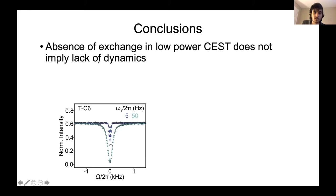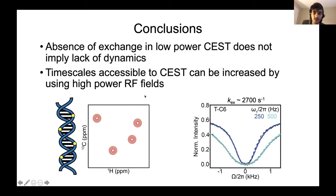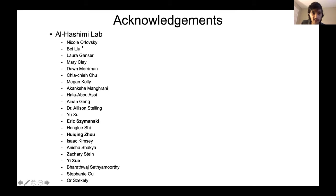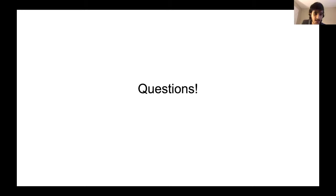In conclusion: when CEST is run at low spin lock powers and shows only one dip, that does not imply no dynamics — increasing the spin lock power may reveal new dynamics. The CESS experiment can be run on all nuclei in a molecule simultaneously, allowing measurement of faster timescale exchange processes across all nuclei in a single shot. This is an advantage over R1 rho, which requires a separate experiment per nucleus. I'd like to thank the lab, Hashimi, my thesis committee, the Duke NMR Center, and the NIH for funding.